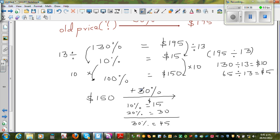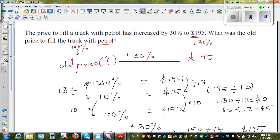And that does make sense. 150 plus 45 is equal to $195. So this is how you can find the original amount or the old amount using ratio and proportion.